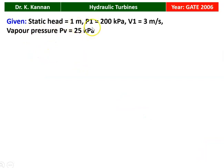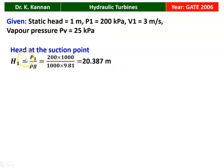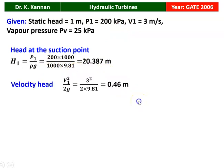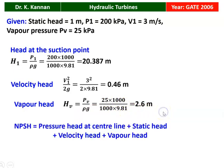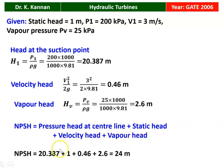Static head = 1 meter, P₁ = 200 kPa, V₁ = 3 m/s, vapor pressure = 25 kPa. Pressure head at suction point: H₁ = P₁ / (ρg) = 200,000 / (1000 × 9.81) = 20.387 meters. Velocity head: V₁² / (2g) = 3² / (2 × 9.81) = 0.46 meters. Vapor head: P_v / (ρg) = 25,000 / (1000 × 9.81) = 2.6 meters. NPSH = pressure head + static head + velocity head − vapor head = 20.387 + 1 + 0.46 + 2.6 = 24 meters. That is the answer.